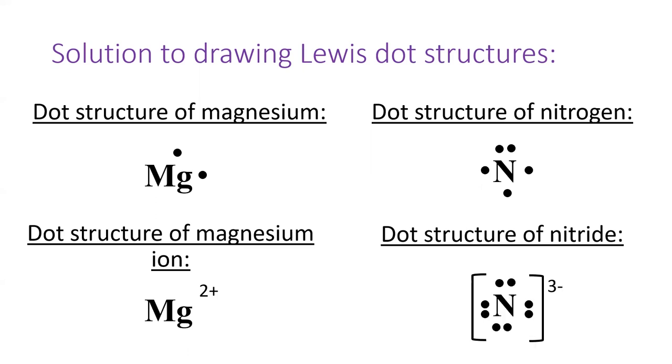The nitride ion has a three minus charge, meaning it has three extra electrons compared to nitrogen. We draw a total of eight dots around nitride and indicate the charge with a three minus outside brackets. Nitride ion also fulfills the octet rule.